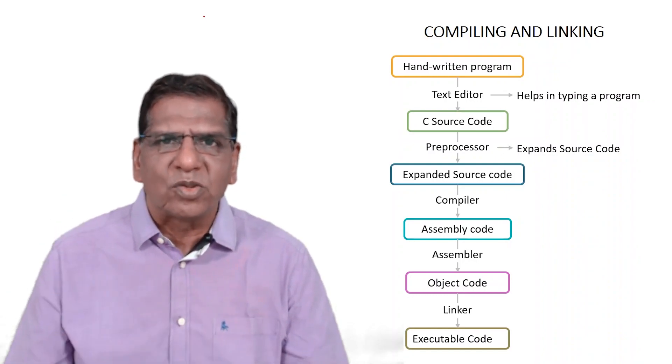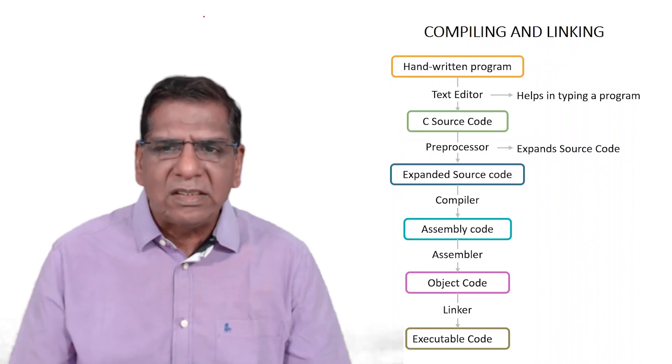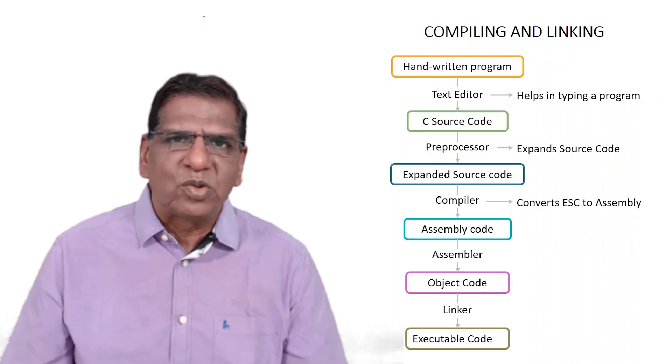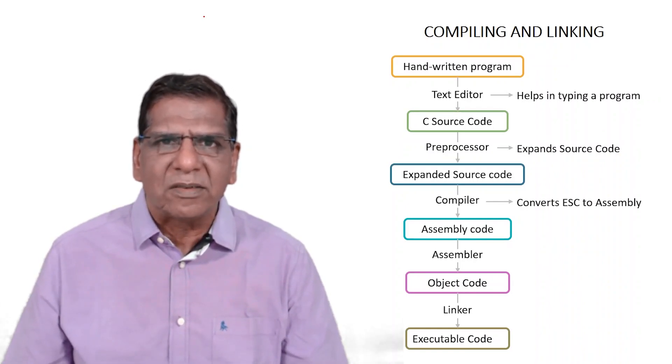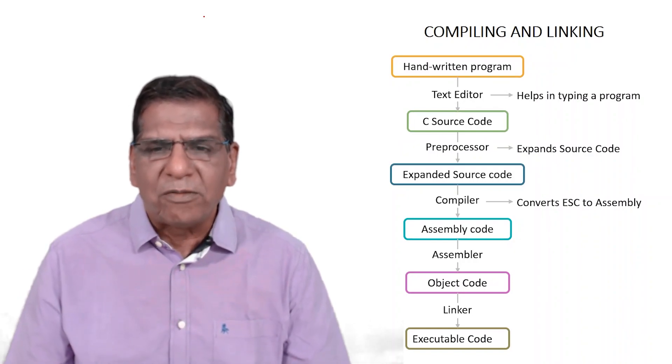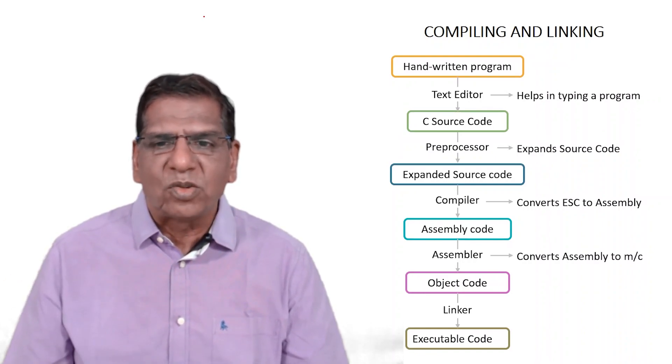It expands upon the source code, generates the expanded source code. This is handed over to the compiler. Its job is to convert the expanded source code into assembly language instructions. These are readable instructions, human readable instructions. But when you submit this to the assembler, it generates machine language code. Object code is always in machine language.